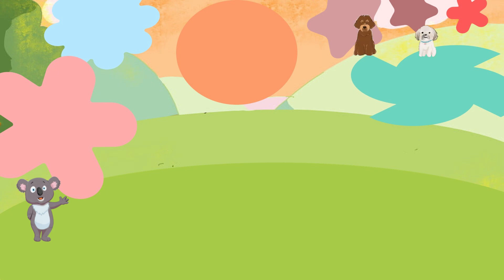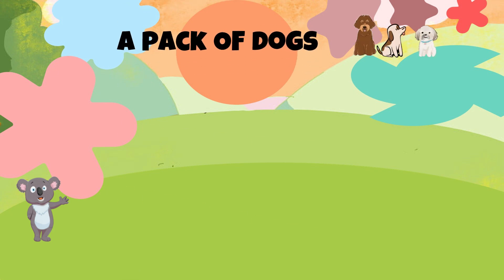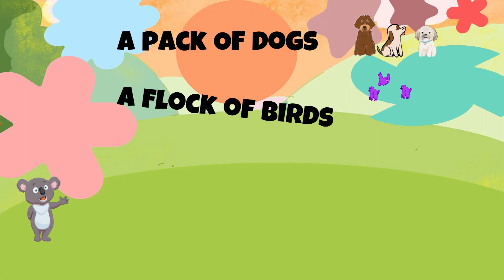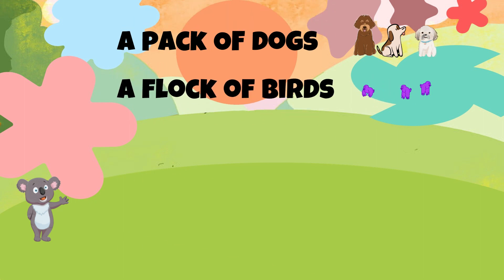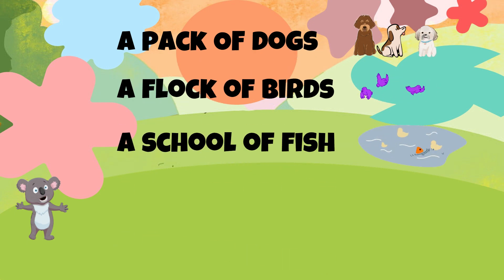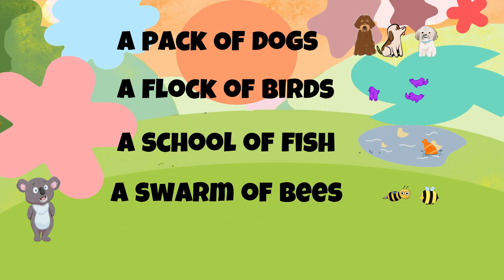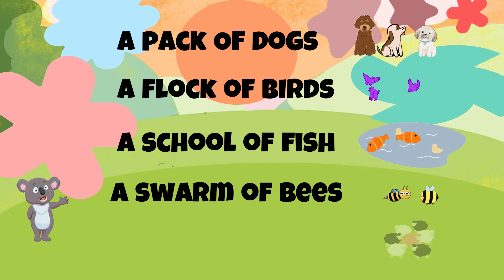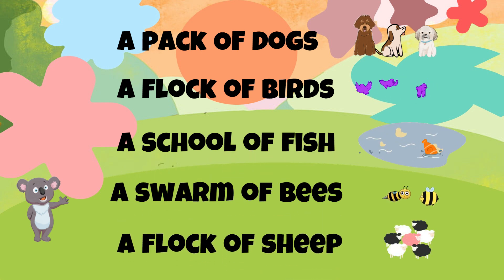First, there were the dogs — we will say a pack of dogs. Next, a group of birds, which we will call a flock of birds. Then many fishes, which we will call a school of fish. Followed by many bees, which we will say a swarm of bees. And finally, sheep, which is called a flock of sheep. I hope this was easy for you!